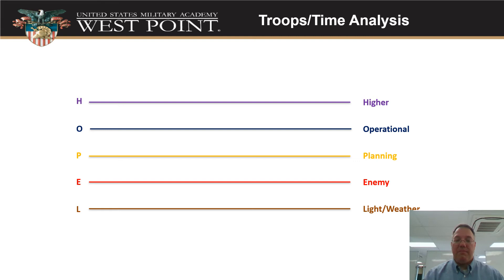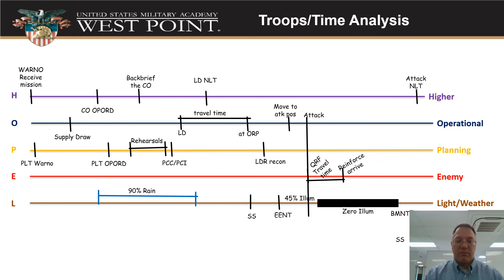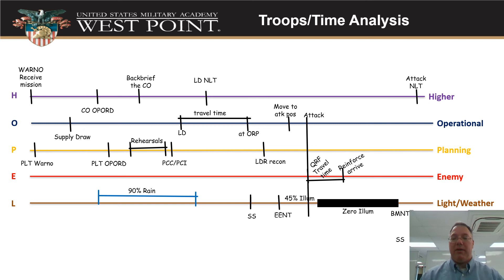Here's an example of that sheet. We've broken events down into lines — a good way to help you think through it and show it to others visually. We've got events for higher, operational things, planning things, enemy, and light and weather. From the left side — time now, when you receive mission — to the right side, mission complete. You divide up the time and put a scale across the bottom. In this filled-out example, on the left we start with receiving the mission, then higher events like back-briefing the company commander, the company op order, and the commander's no-later-than time for the LD.